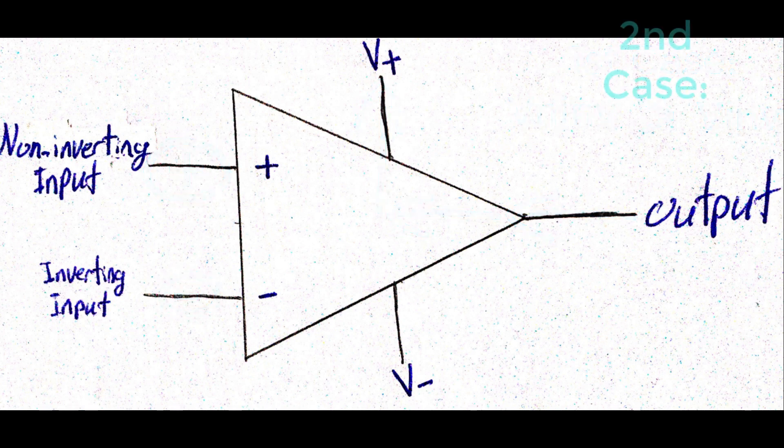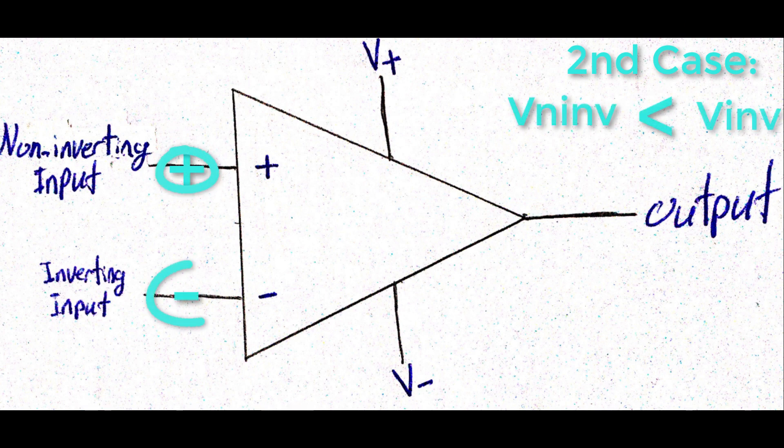In the other case, the non-inverting input voltage is smaller than the inverting input voltage, which will lead the output voltage to be pulled down to V-. And that's all about comparators.